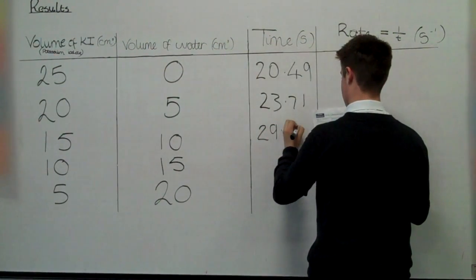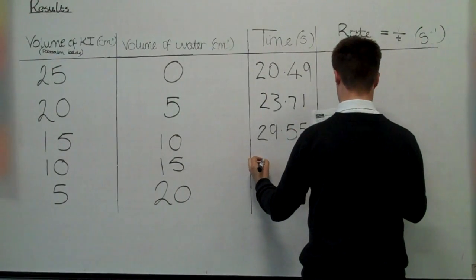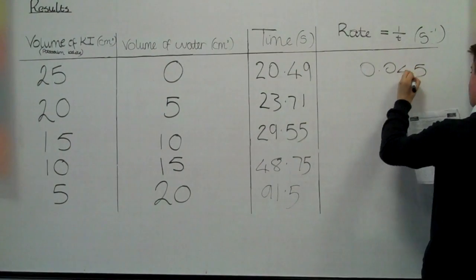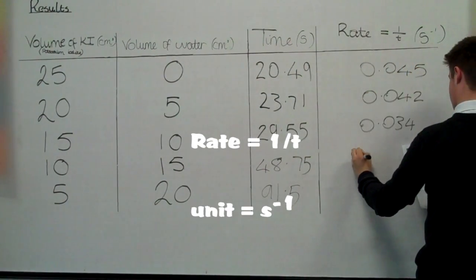We run through the experiment as shown previously and write up the results. The rate equals 1 over T. The unit is s to the minus 1.